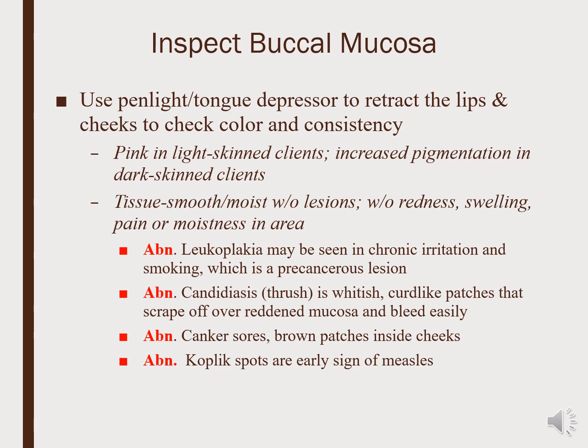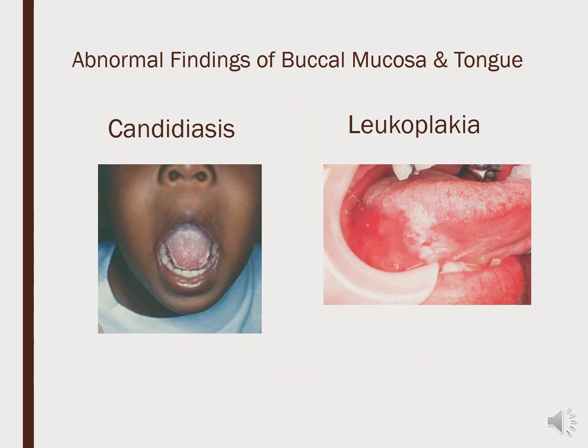We inspect the buccal mucosa using light, noting that pigmentation may differ with skin tone. Key findings to assess include leukoplakia, which is a precancerous lesion; candidiasis, which is a yeast infection also called thrush, presenting as white curd-like patches; canker sores; and Koplik spots, which are signs of early measles.